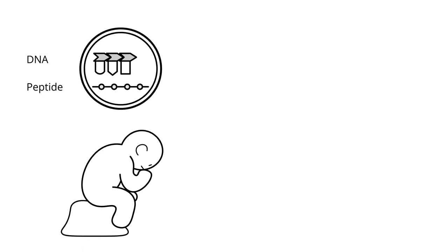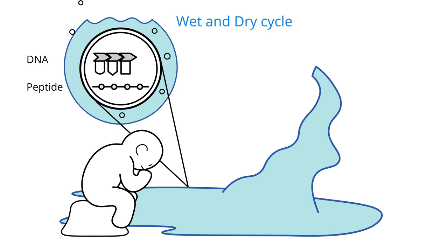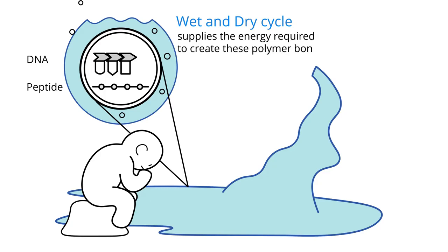A simple wet and dry cycle, such as what can happen at the edge of a pond which constantly gets wet and then dries back out again, has been demonstrated to sufficiently supply the energy required to create these bonds. Iterate multiple wet and dry cycles, and we have ourselves the foundation required for the simple amino acids and nucleic acids to bond repeatedly in order to form complex chains of peptides and DNA.